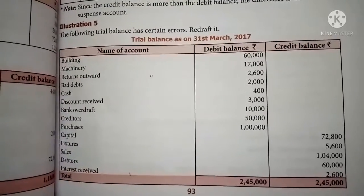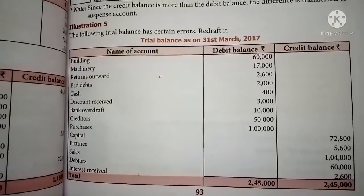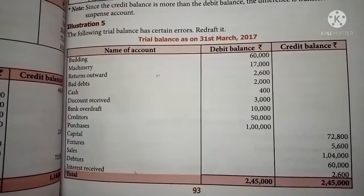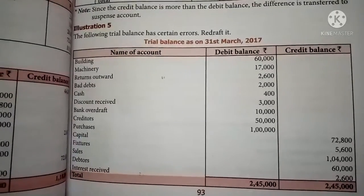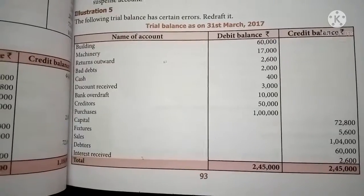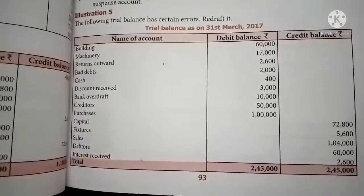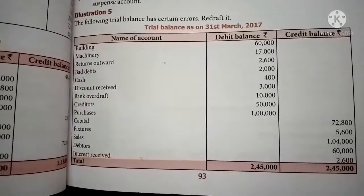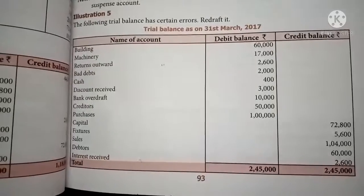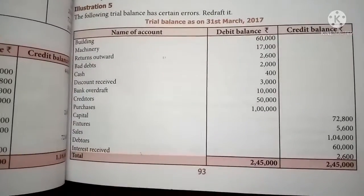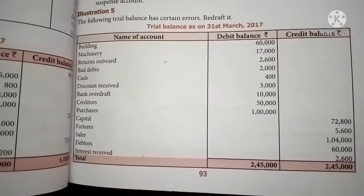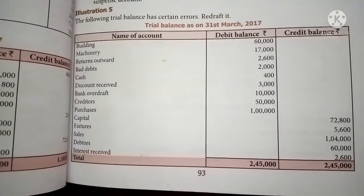Sales is one of the revenue items — it should be shown in the credit column, and it is already written on the correct side — 1,04,000. Debtors is one of the property items — it should be shown on the debit column, but it is written in the credit column, which is the wrong side. So write the 60,000 in the debit column. Interest received is one of the income items — it is shown in the credit column, which is correct. Revenue should be shown in the credit column — 2,600, written as it is.